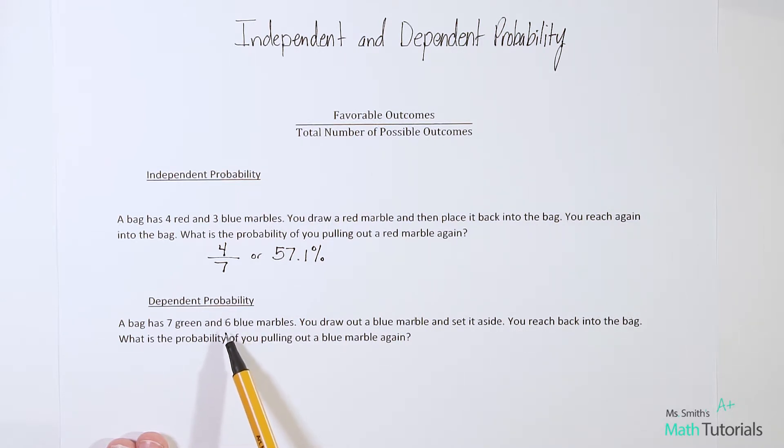So a total of 13 marbles, right, to start with, but we took one out and we set it aside. So now we only have 12 marbles. There were 13, now there are only 12 for this second drawing. And then when we reach back into the bag again, the second time, what is the probability of us pulling out a blue? Well, the blue is six. There are six marbles originally, but we've already taken one out. So how many are there now? Well, now there's only five marbles. So there's five favorable opportunities out of a total number of marbles of 12.